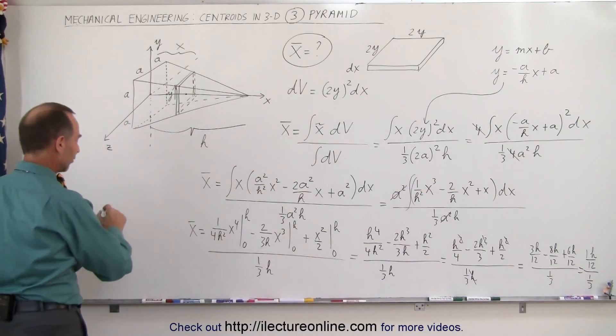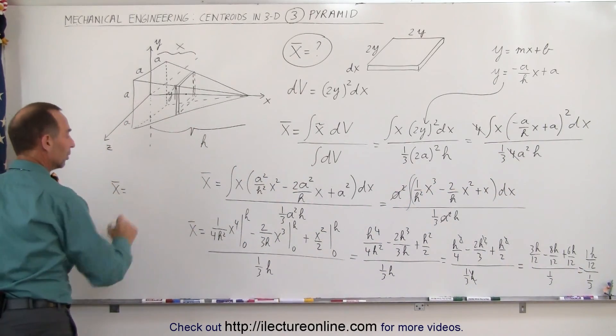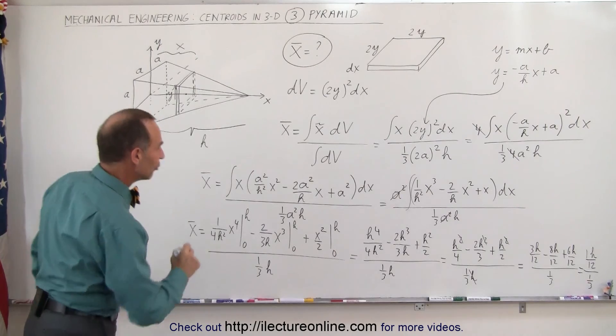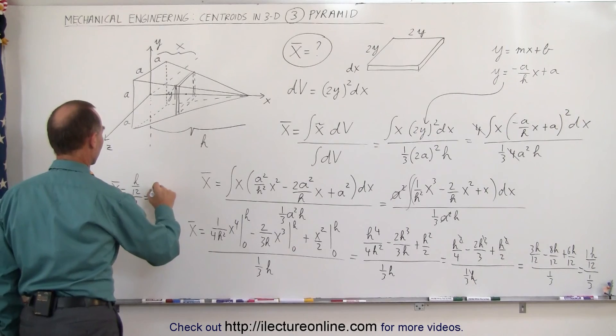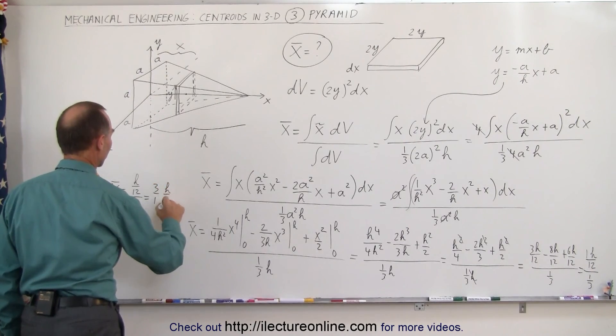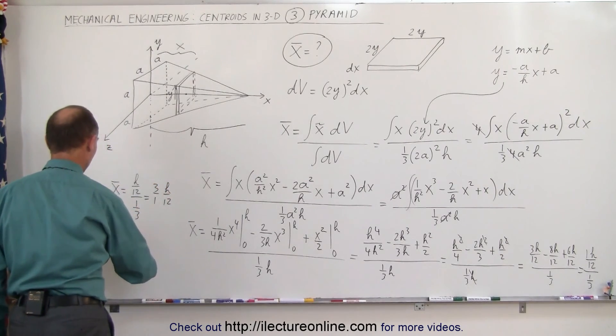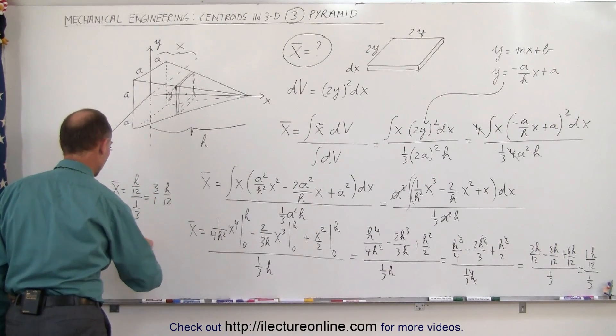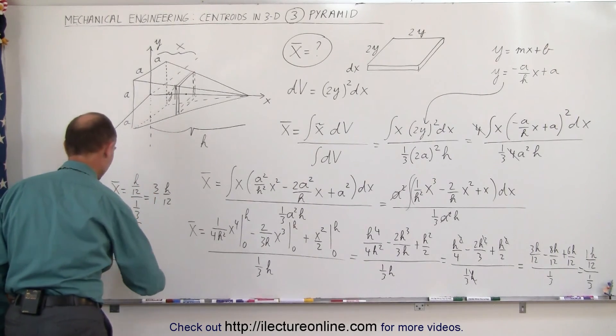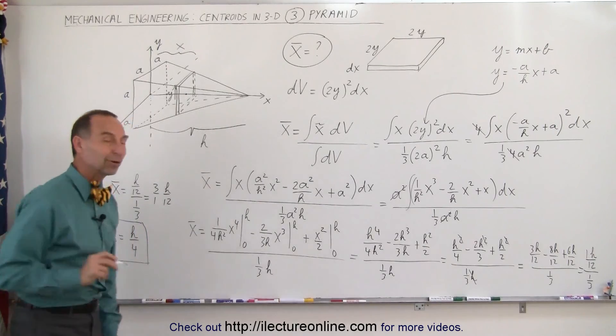Let me go over here to finish it. The x-coordinate is equal to h over 12 divided by 1 over 3, which is equal to 3 over 1 times h over 12. So the x-coordinate is equal to 3 divided by 12, which is 1 over 4, or h over 4 is the final answer for this particular problem.